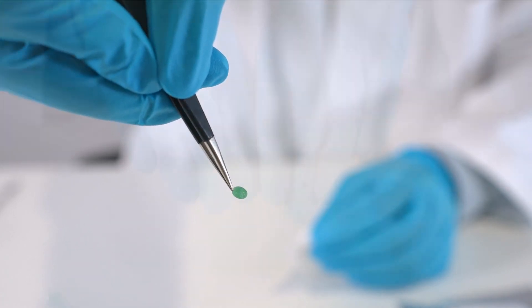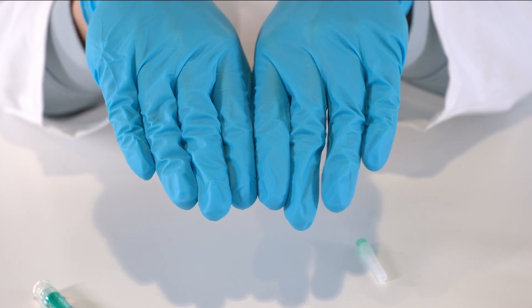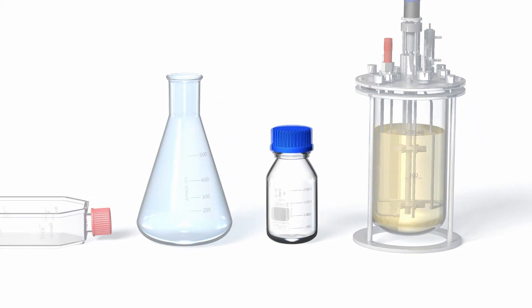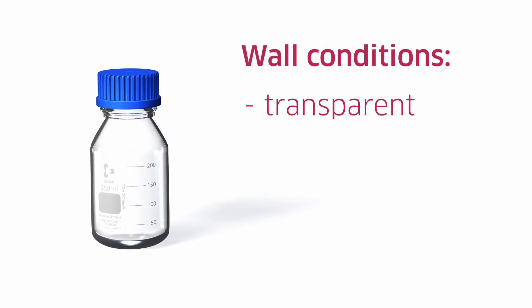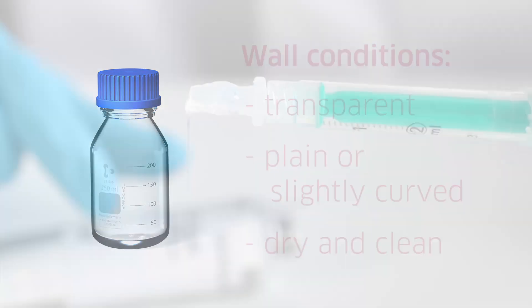Through the whole process gloves should be worn to protect the sensor spots and the quality of your measurements. Prepare the sample container of your choice. The wall should be transparent and the adhesion surface should be plain or only slightly curved. Ensure the surface is dry and clean for better mechanical stability of your glued sensor spot.